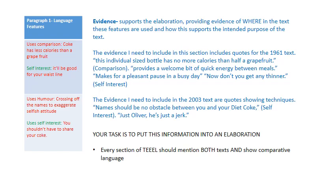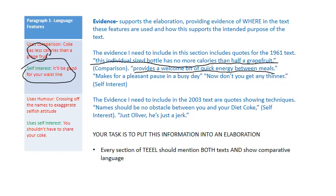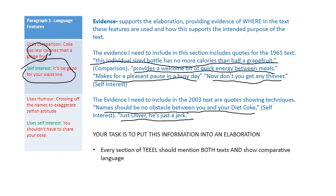The evidence I need to include includes quotes. From the 1961 text: 'This individual sized bottle has no more calories than half a grapefruit' — an example of comparison. 'It provides a welcome bit of quick energy' — to show self-interest. 'It makes for a pleasant pause in a busy day' and 'Don't you get any thinner' — these are things that show what's in it for the audience. For the 2003 text: 'No name should be no obstacle between you and your Diet Coke' — there's some self-interest there — and the idea that 'just Oliver' is a jerk is an example of the humour used throughout.